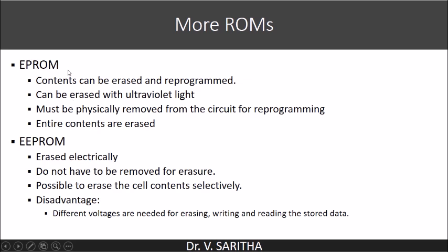EPROM — erasable programmable ROM. Contents can be erased and reprogrammed. It can be erased with ultraviolet rays, but it must be physically removed from the circuit for reprogramming. Entire contents are erased. Once the EPROM chip is manufactured and programmed, it is possible to reprogram it, but the disadvantage is that we are supposed to physically remove it and reprogram it. Also, we will not be able to reprogram only a few contents — the complete entire contents must be erased before programming again.